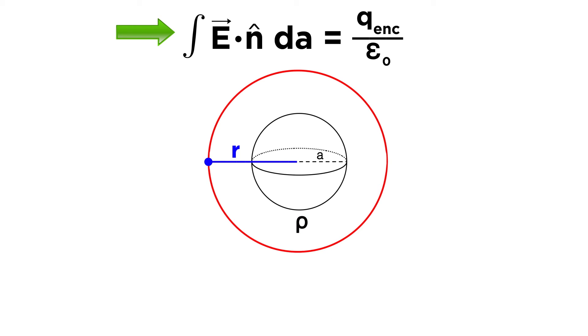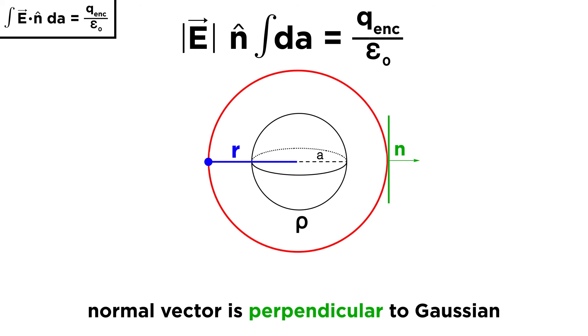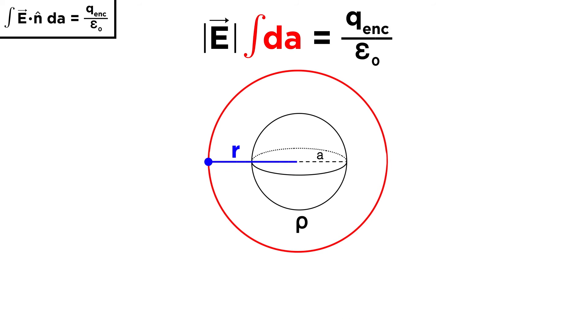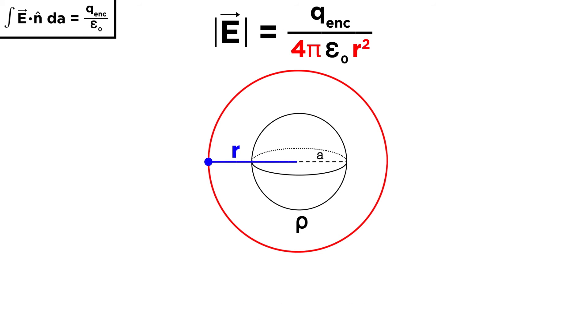We will then manipulate Gauss's law according to this particular situation. We can pull the electric field out of the integral because it's constant over the surface, and we can pull the normal vector out of the integral because it is perpendicular to the surface of the Gaussian sphere, and therefore reduces to 1. Then we must integrate dA. This represents the surface area of the Gaussian sphere, and the formula for the surface area of a sphere is 4 pi r squared, given that we have selected r as the radius for the Gaussian sphere.